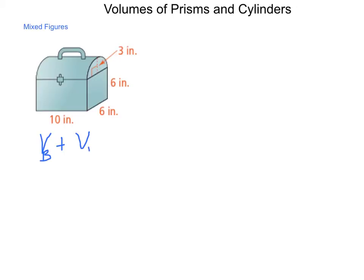So volume base, volume top. The volume of the base is going to be the base area, which is ten times six, times its height, which is also six. And we're going to add to that the volume of the cylinder.